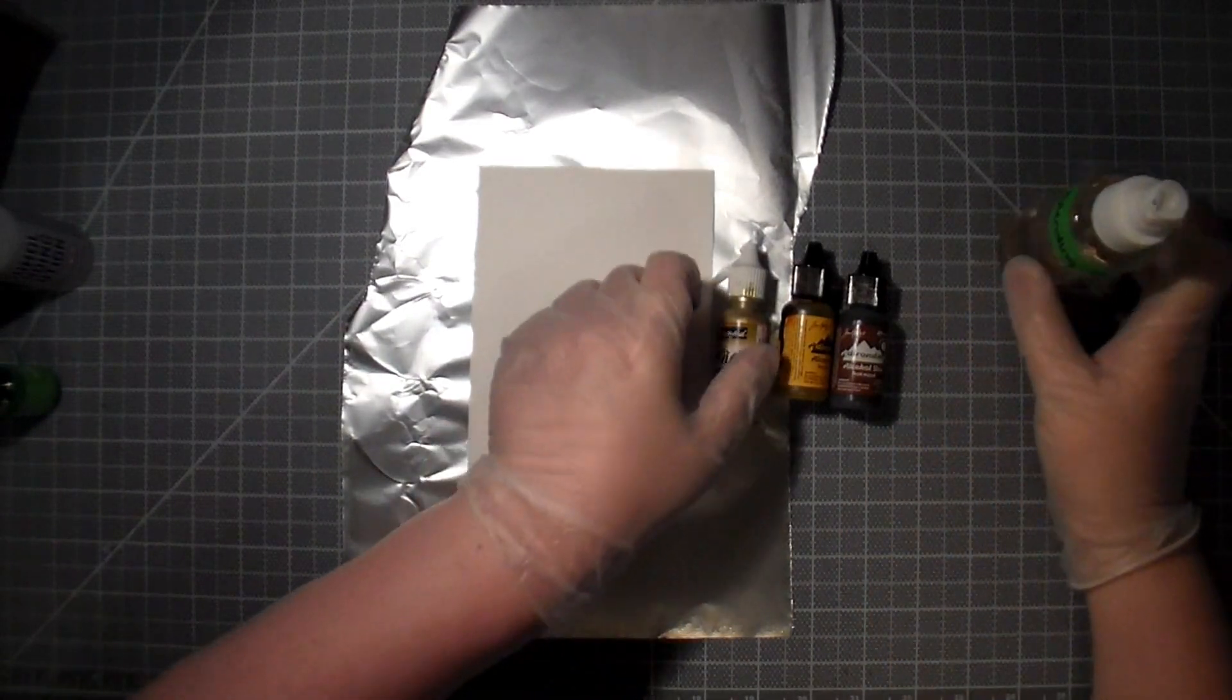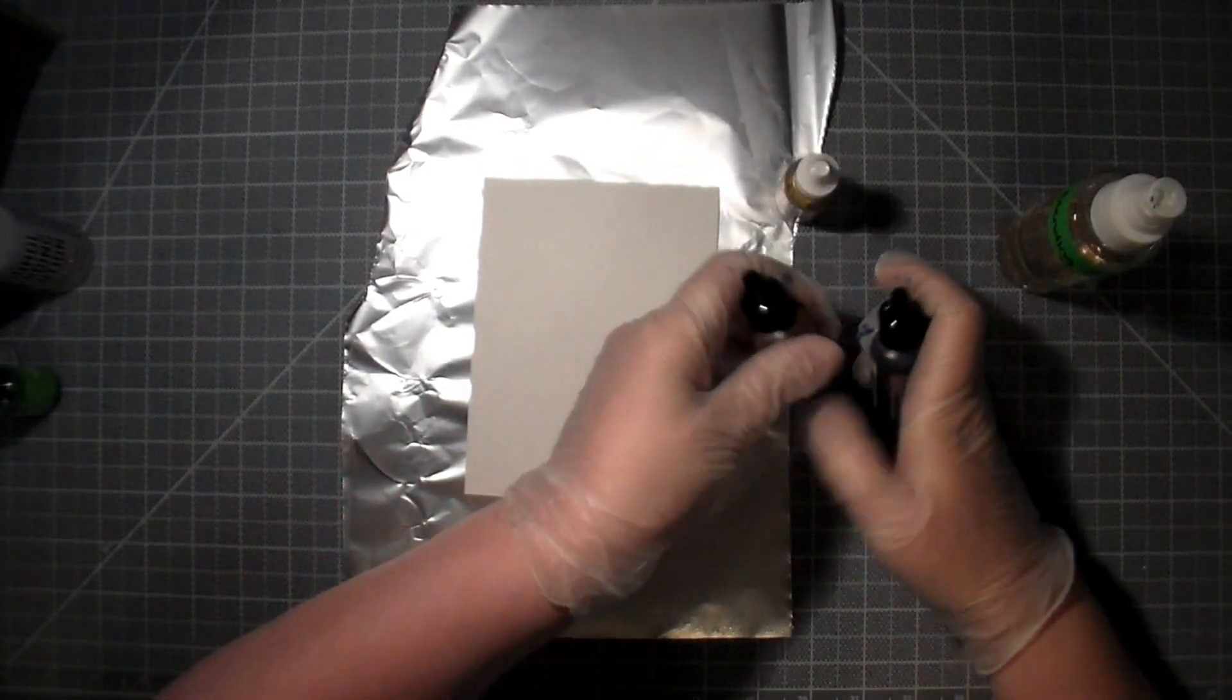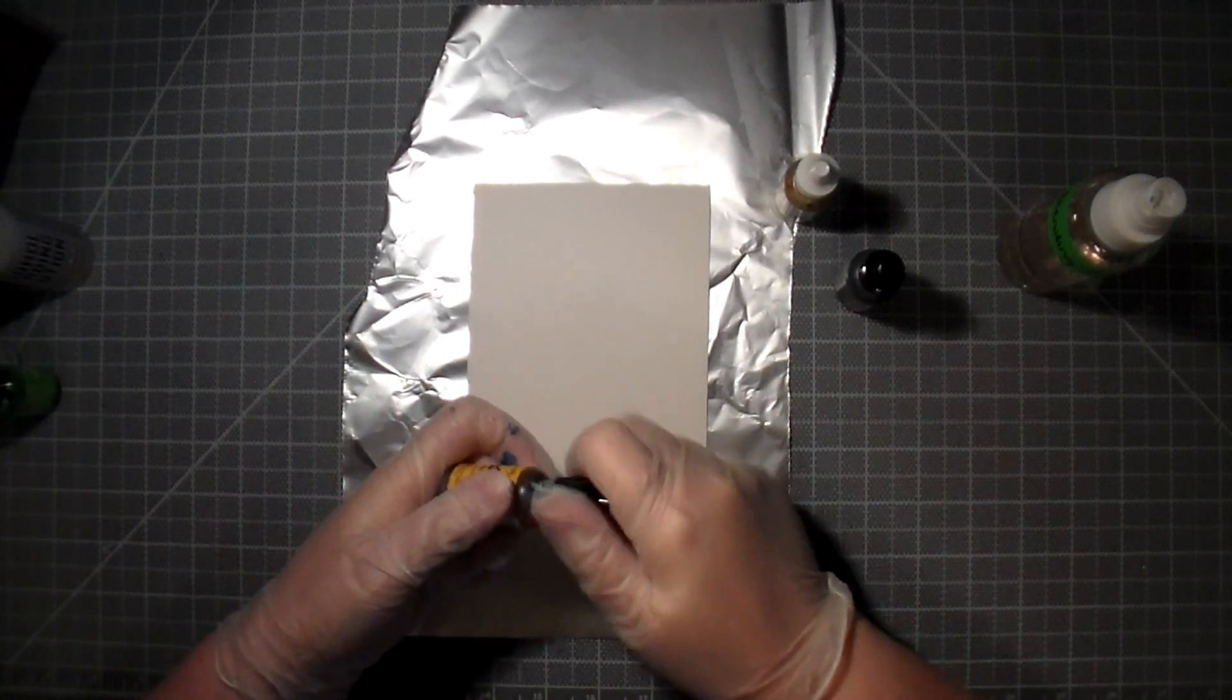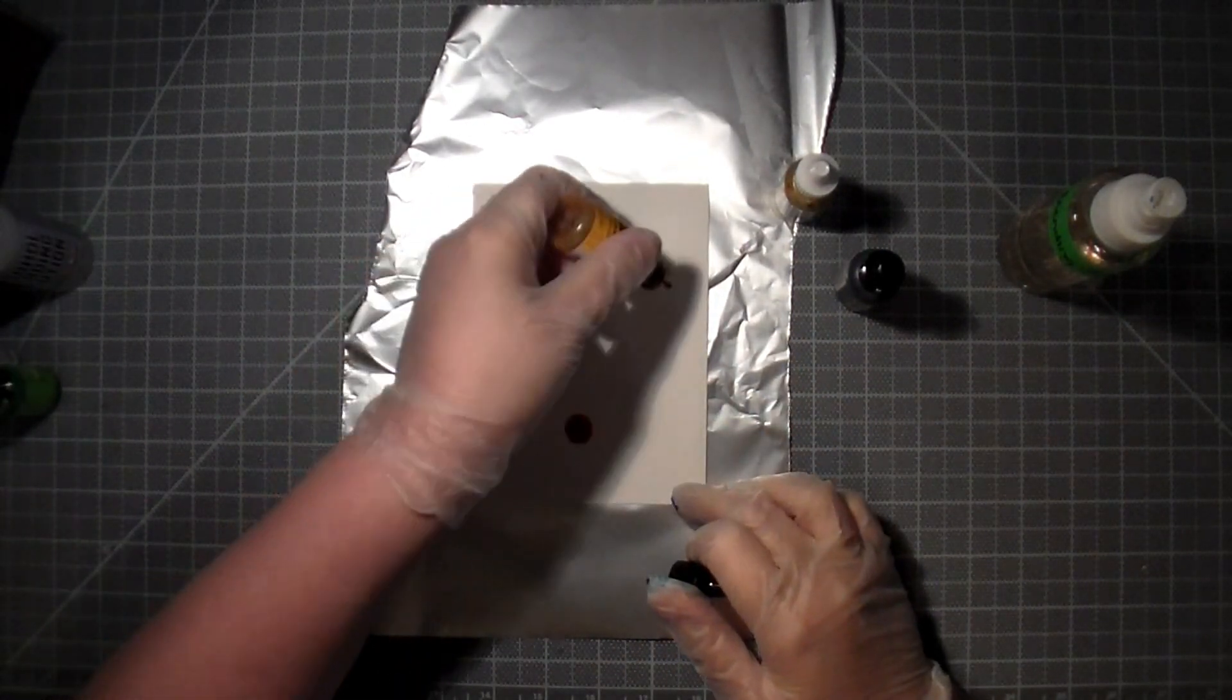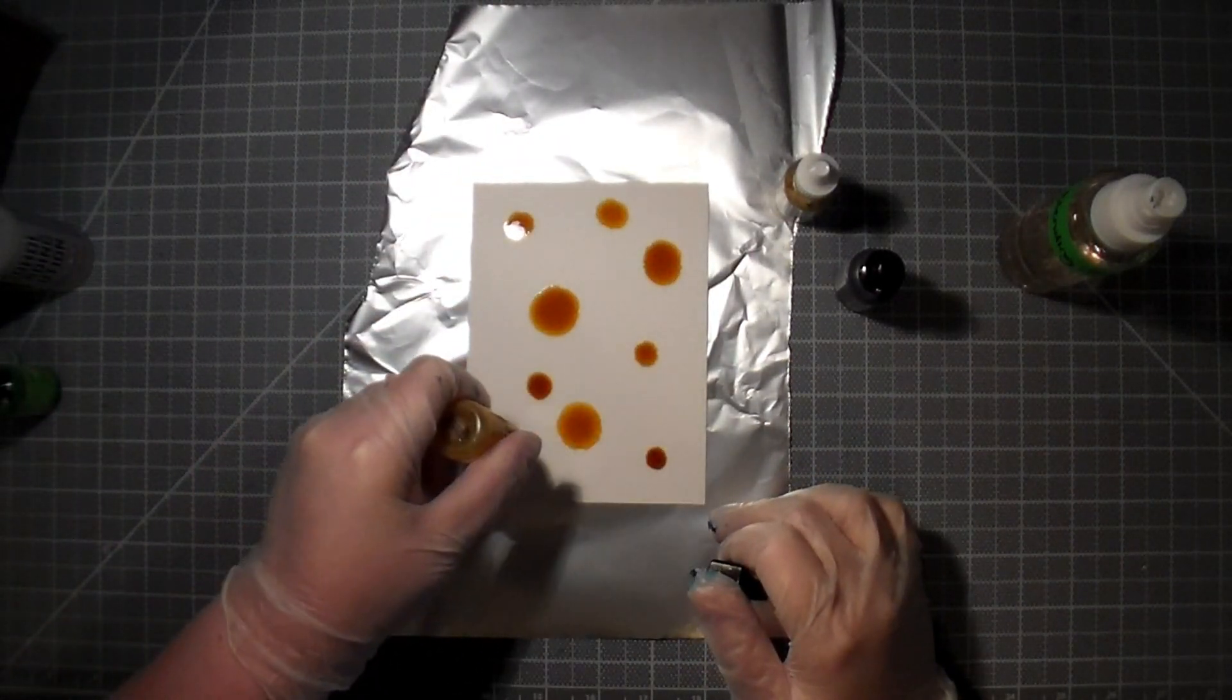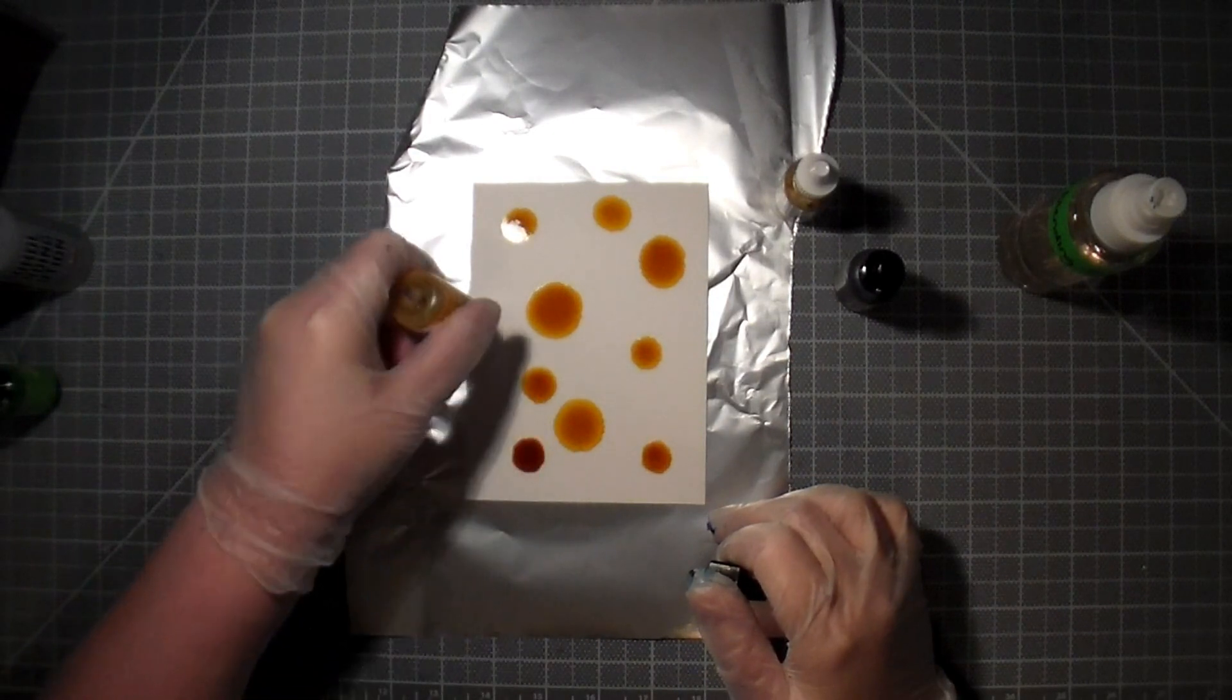Another technique for alcohol inks on Yupo is to just add drops of color randomly on your piece of paper. I'm starting out by adding lots of different dots of yellow in different sizes, and the ink spreads to create different sizes of circles.